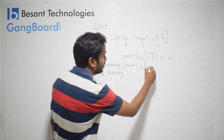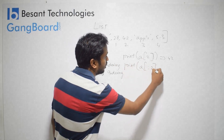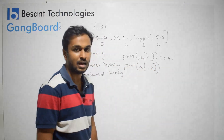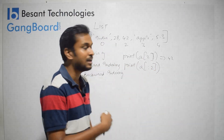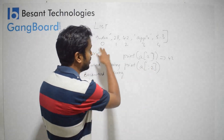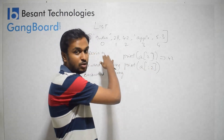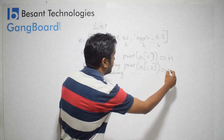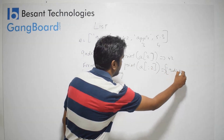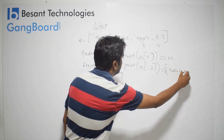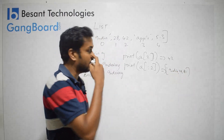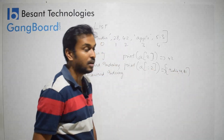In slicing, I can use colon notation, like colon 2. The left side of the colon is the starting index and the right side is the ending index. If the left side is empty, it automatically starts from index 0. So the output will be a list of 'India', 28, and 42. In this way, we have several slicing options.